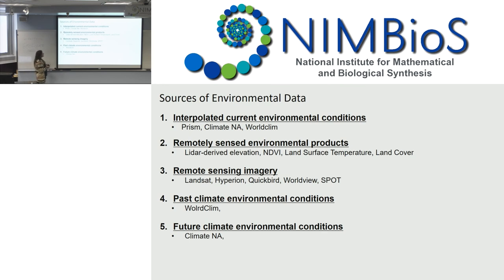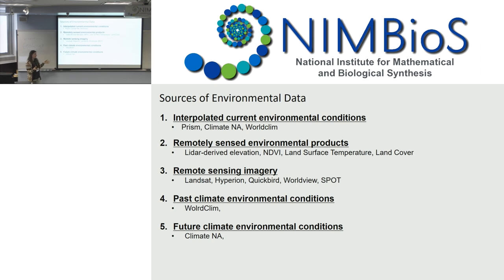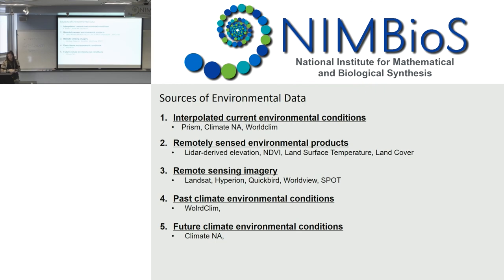There are different ways to get environmental data: interpolated current environmental conditions such as ClimateNA, WorldClim, and PRISM; remotely sensed products like MODIS NDVI, other vegetation indices, land surface temperature, and land cover; raw imagery like Landsat, Hyperion, or QuickBird if you want to make your own variables; past climate conditions; and future climate conditions. My advice is: read the metadata, understand what you're using, make sure it fits your purpose and your occurrence data, and that it works with your extents.